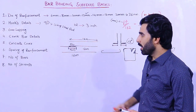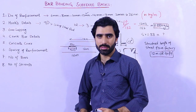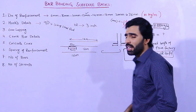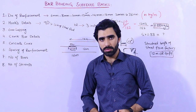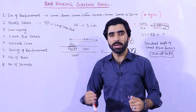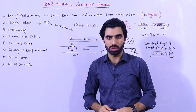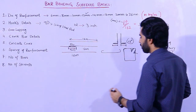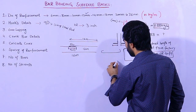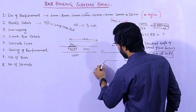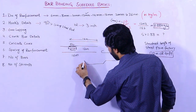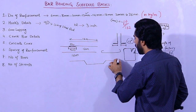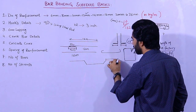Now, what is crank bar? As you know, crank bar is provided in a slab and a beam to resist negative bending moment at the end of the support. Here you can see this is a crank bar.